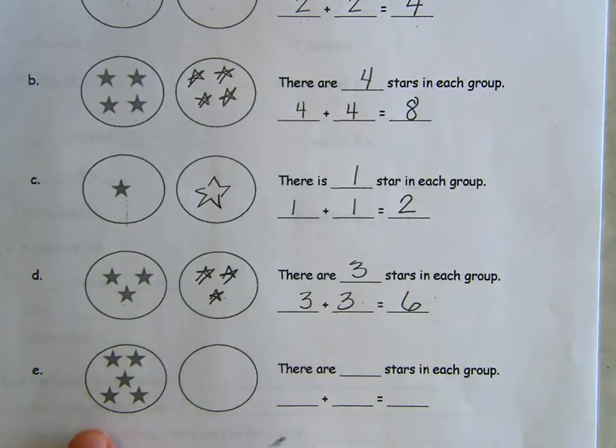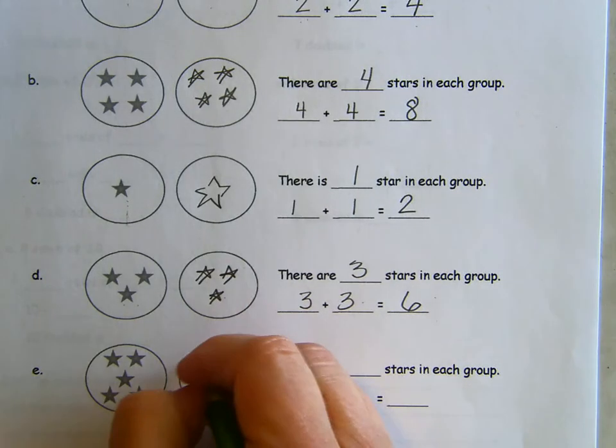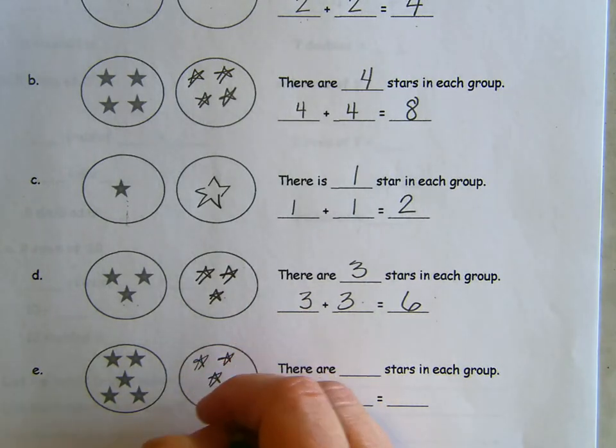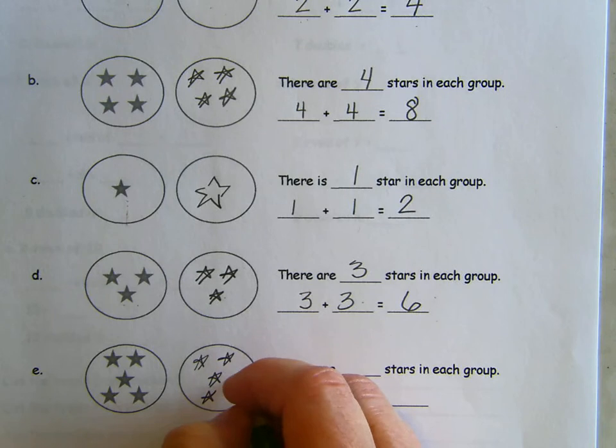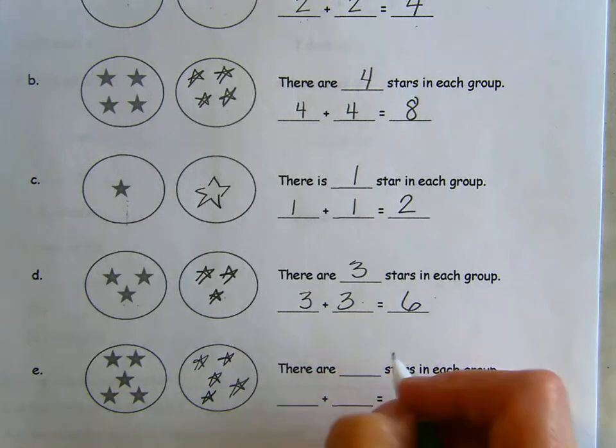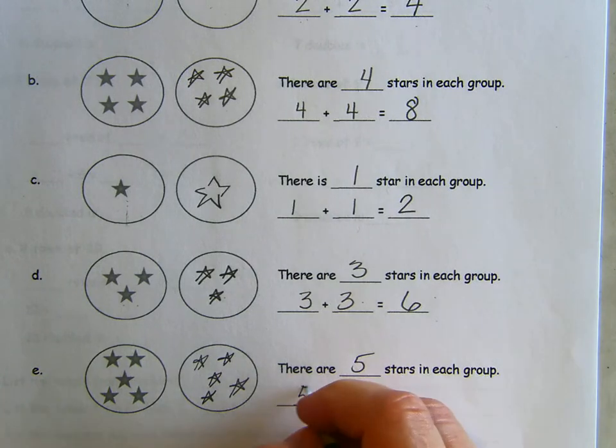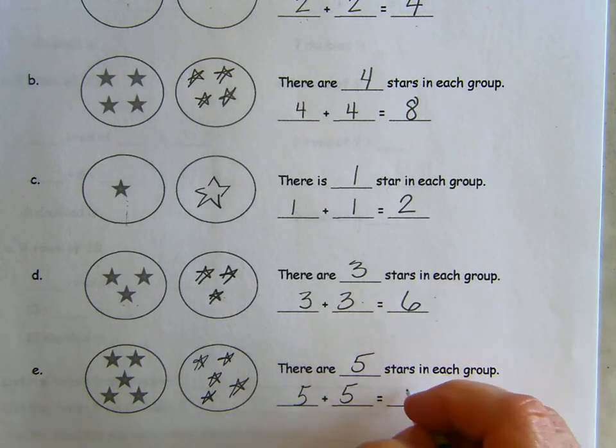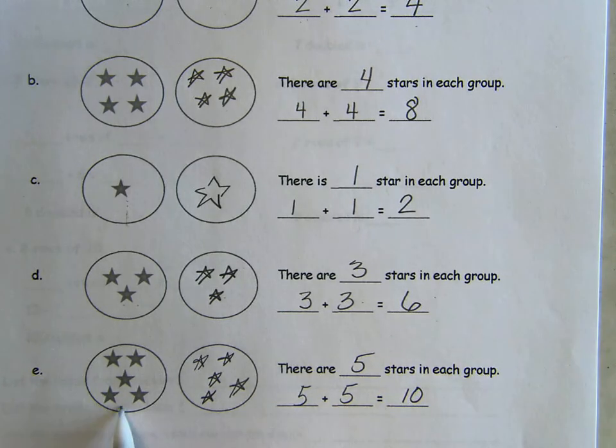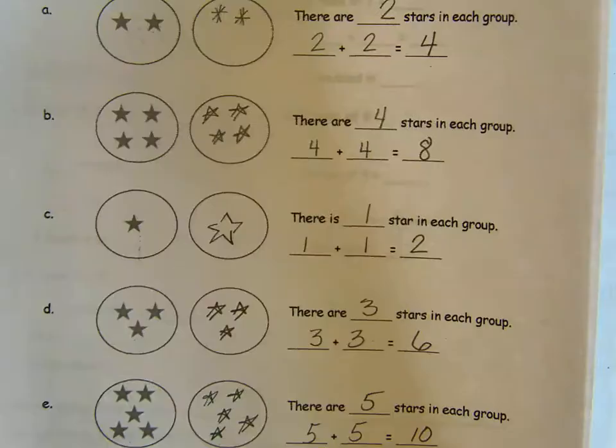The last one has five. One, two, three, four, five. Five stars in each group. So what's the doubles equation? Five plus five equals ten. Five doubled equals ten. If you need to pause for a second, go ahead. I'm going to move on to the second page.